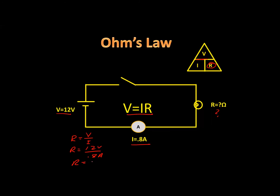Dividing 12 by 0.8 gives us a resistance of 15 ohms. That is how we use the equation for Ohm's law — V equals I times R — to calculate the voltage, the current, and the resistance in any electrical circuit.